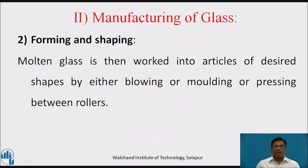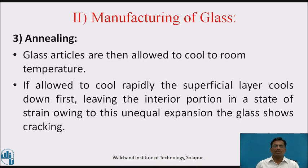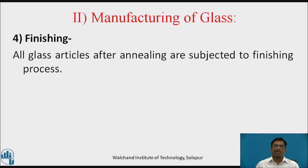Second step, after melting, is forming and shaping. Molten glass is then worked into articles of desired shapes by either blowing, moulding, or pressing between rollers. Third step is annealing. Glass articles are then allowed to cool to room temperature. If allowed to cool rapidly, the superficial layer cools down first, leaving the interior in a state of strain, causing unequal expansion and cracking of the glass. Last step is finishing. All glass articles after annealing are subjected to the finishing process.